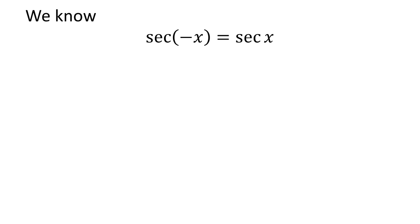As we know, the trigonometry identity secant of minus x is equal to secant of x.